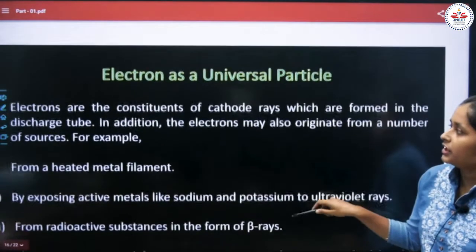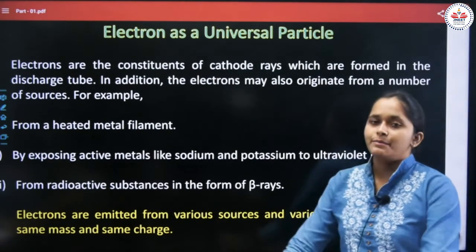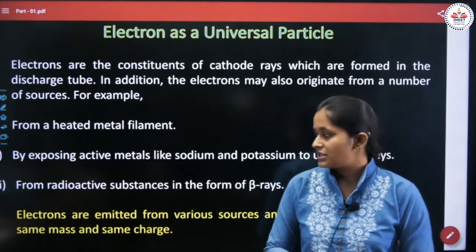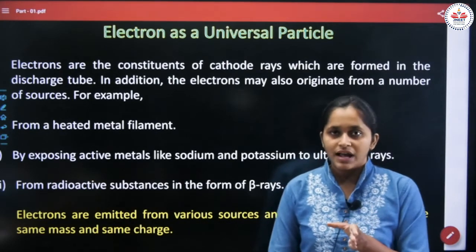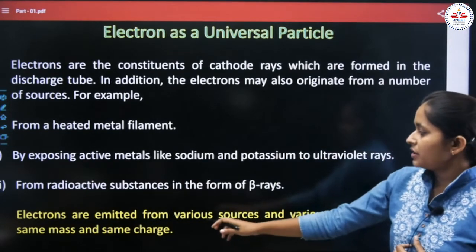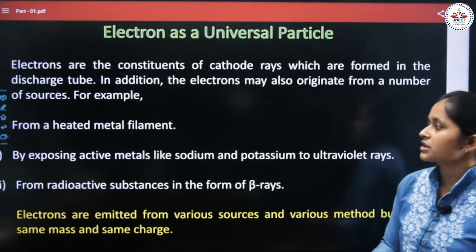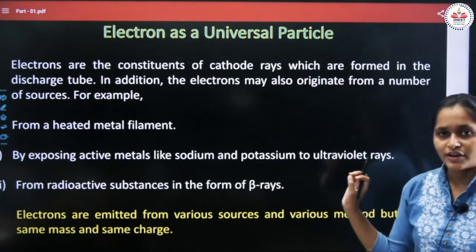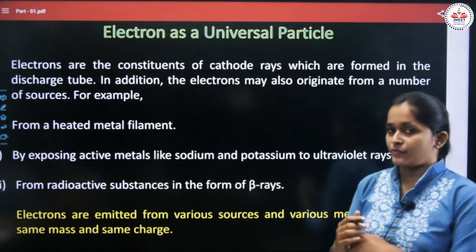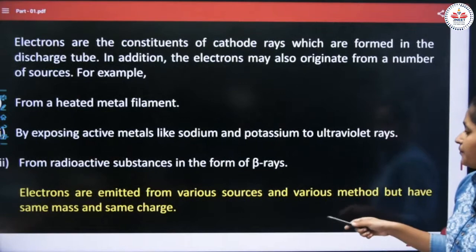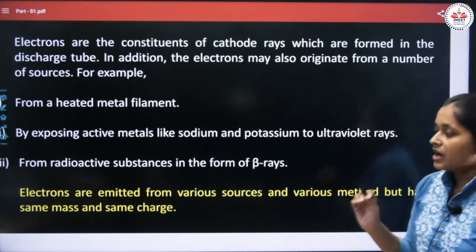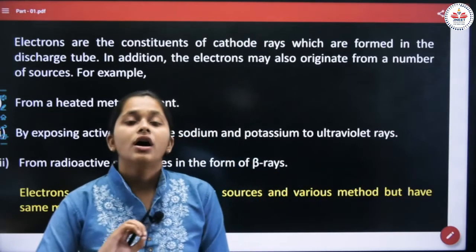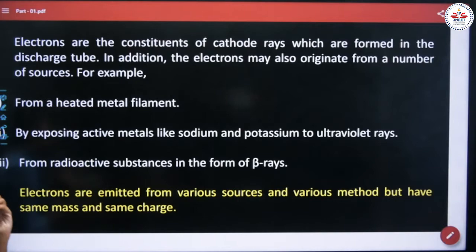Electron as a universal particle: Electrons are a universal particle because electrons emitted from various sources — such as from a heated metal filament, or by exposing active metals like sodium and potassium to ultraviolet rays — always have the same mass and charge regardless of source. This means electrons are present in every substance.